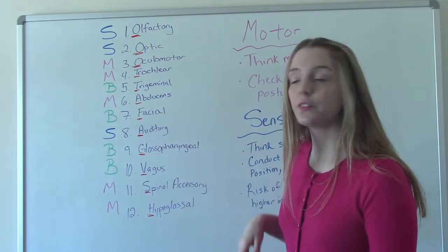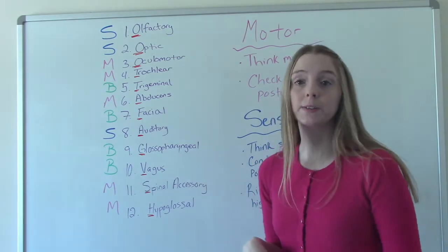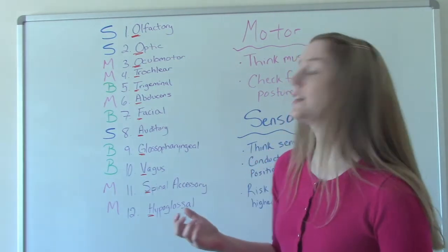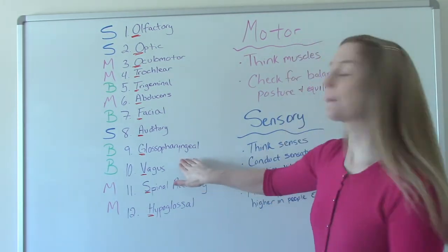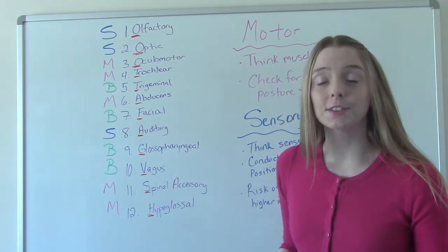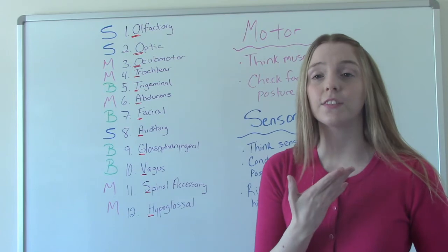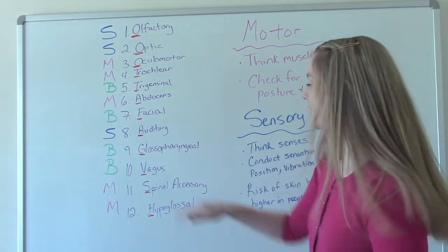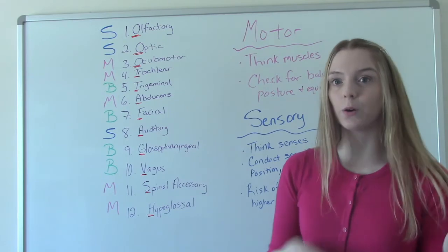Number nine, glossopharyngeal is both because remember it's their ability to taste, which is a sense, and their ability to swallow, which involves muscle. Number 10 is vagus. It's also both. So the sensation of the pharynx and the vibration, the ah sound that we're making when we're doing that. So it's motor and sensory.